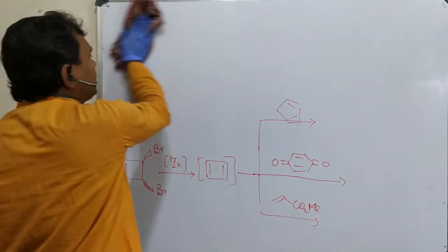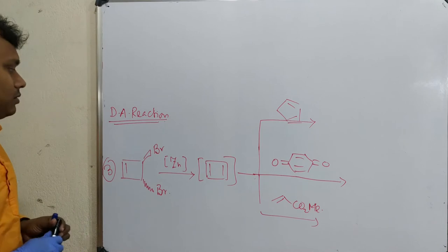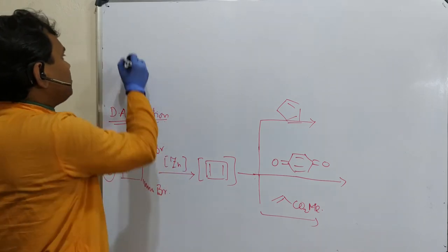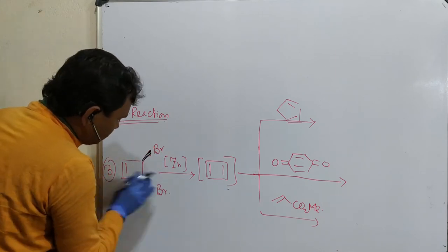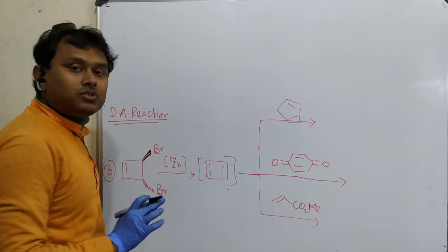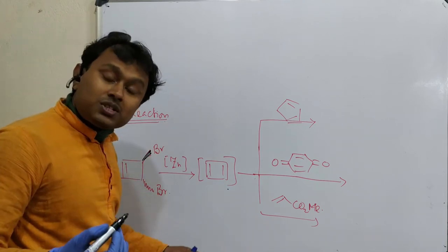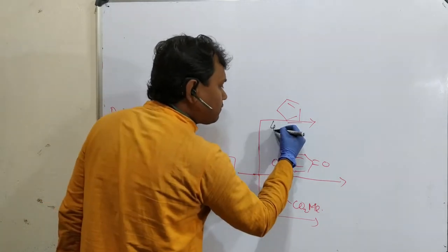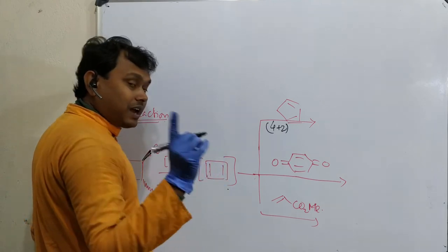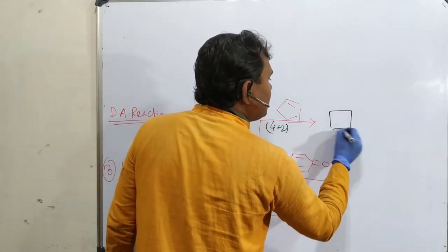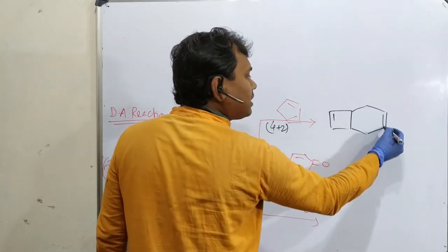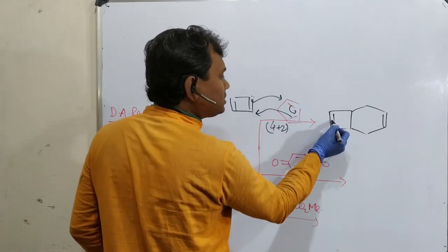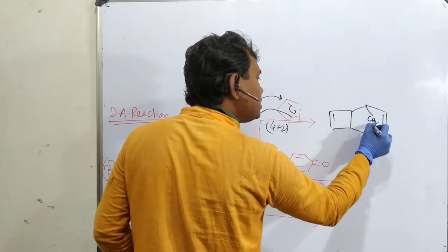Another example: in the presence of a 1,2-dibromo compound with zinc, an alkyne is generated in situ (autocycloaddition). Since this is a transient species produced in the reaction medium, if another reagent is present — for example a diene — it acts as the dienophile in a 4+2 Diels-Alder reaction. The diene attacks the alkyne, giving a six-membered ring with a double bond and a CH₂ bridge.